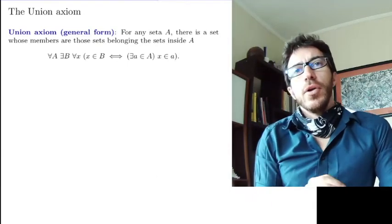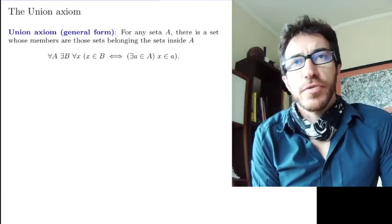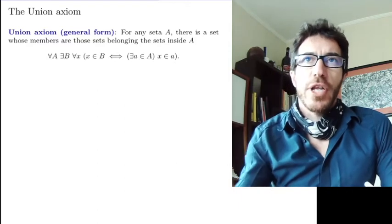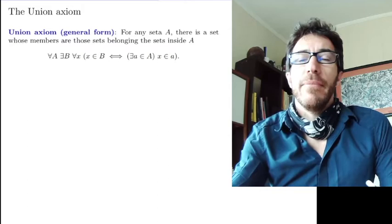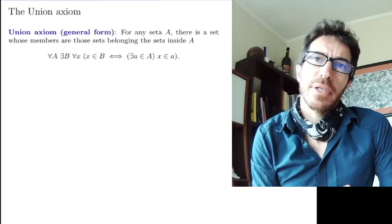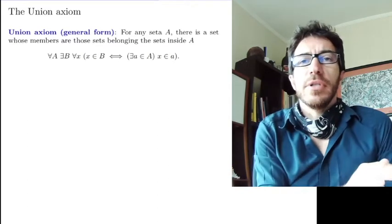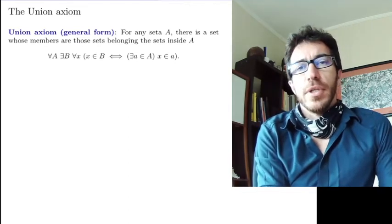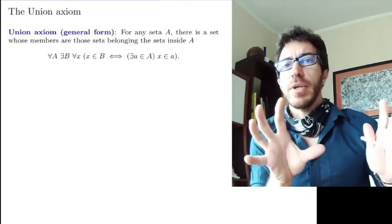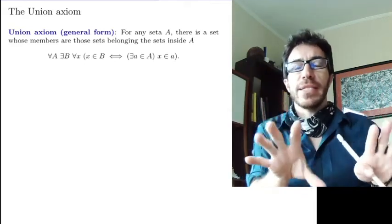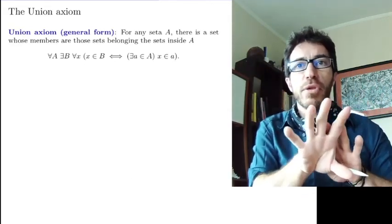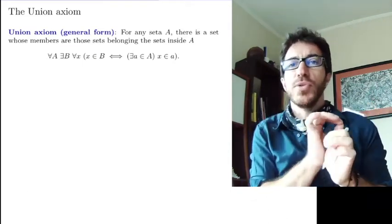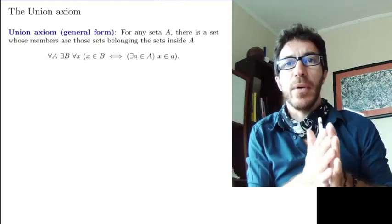Alright, so last time we looked at the first five axioms for Zermelo-Fraenkel set theory, and one of them, the union axiom, we used a preliminary version that was simpler just so we could list them all. Let's look at the actual version of the union axiom. The union axiom we had before allowed us to union two sets together, forming a set that contains the elements of both. Now we want the union axiom that's going to allow us to union any number of sets that we have.